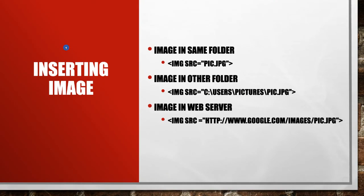The third type is an image from a web server. If your image is on another website, open that website, find the image, and copy its path from the browser address bar the same way as shown previously. These are the three ways of inserting images from three different sources.